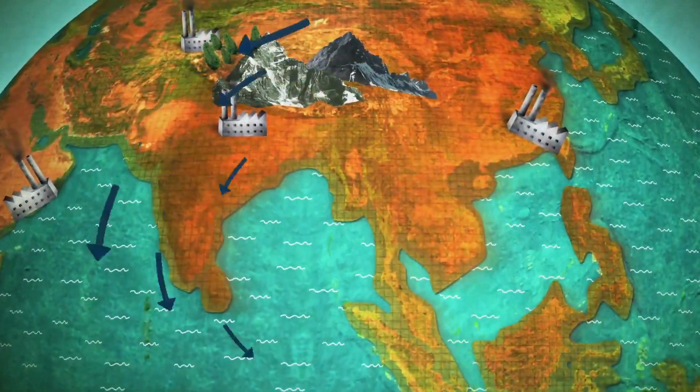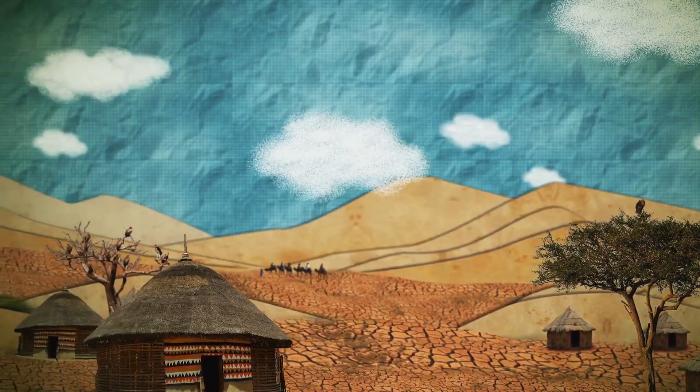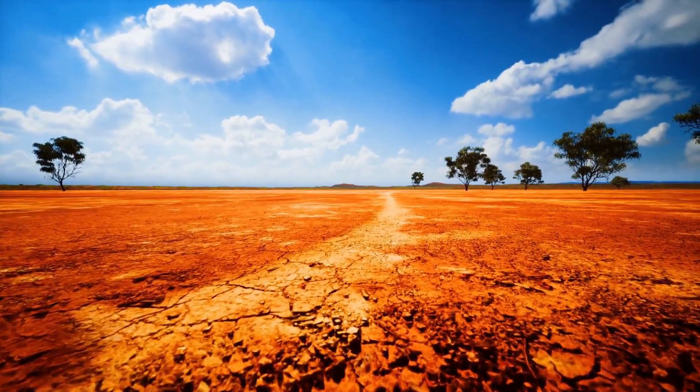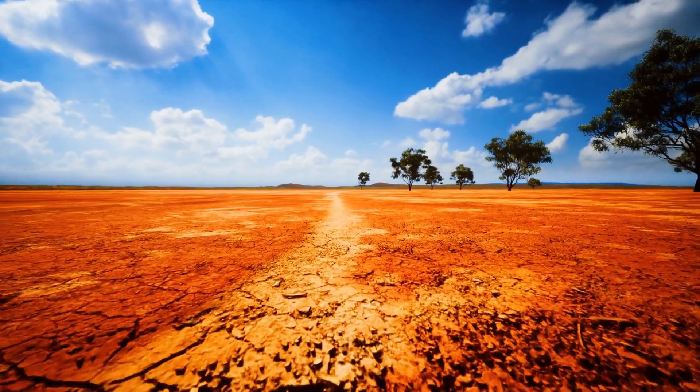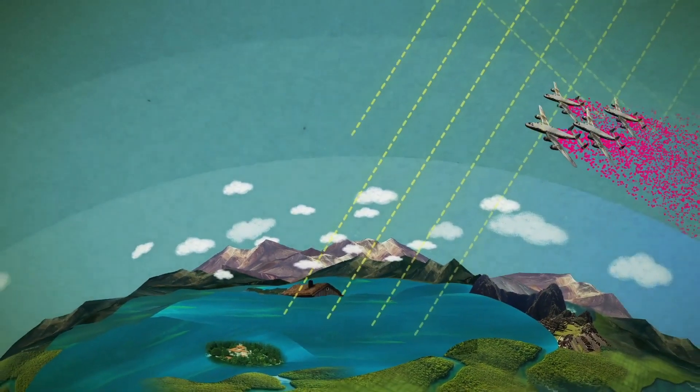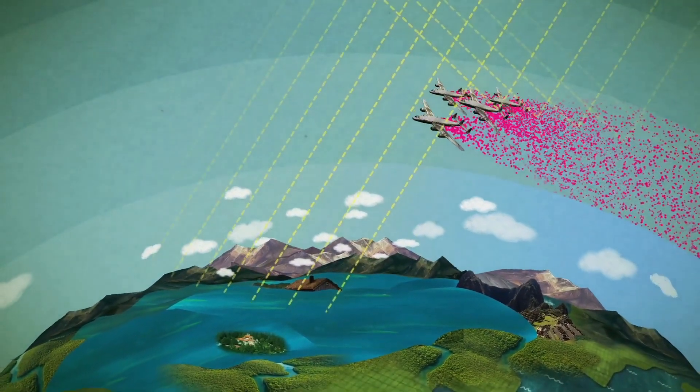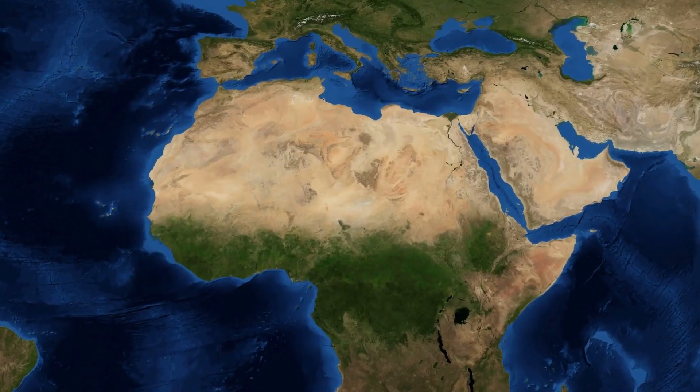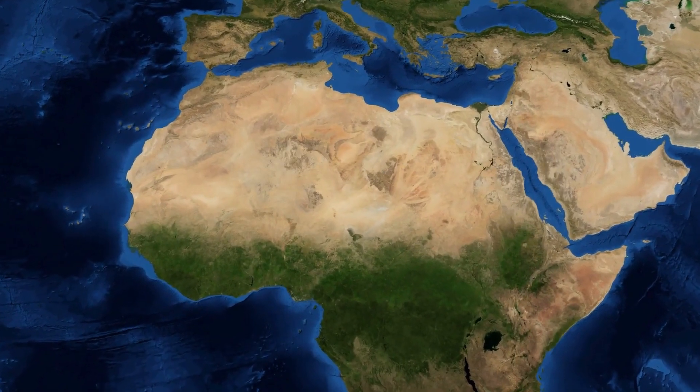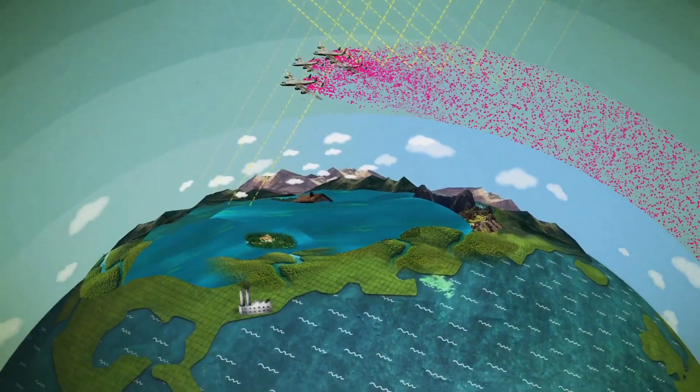So why don't they do this for hot places? Because they haven't reached the technology to actually do this properly. They can do it, but it will take plenty of time. Like if you want to lower the temperature of the Sahara Desert, you would have to spray sulfate in the stratosphere for tens of years.